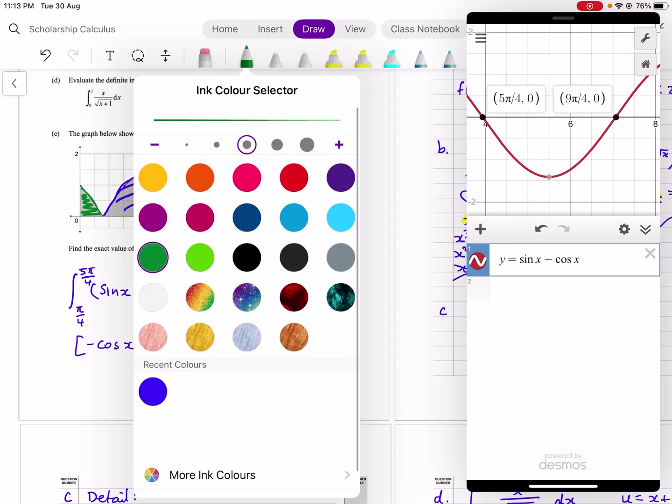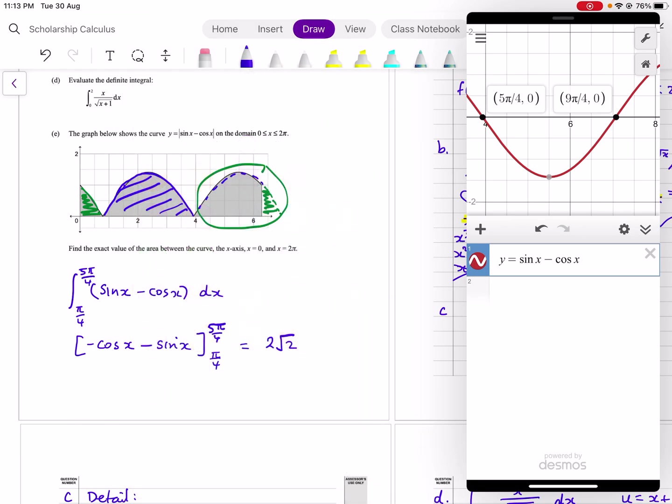So the total area, therefore area required, is twice what we already found. 2 times 2 root 2. 4 root 2. Okay, so that's question 1 done. Hopefully you found that video useful. And we'll catch you in the next one.